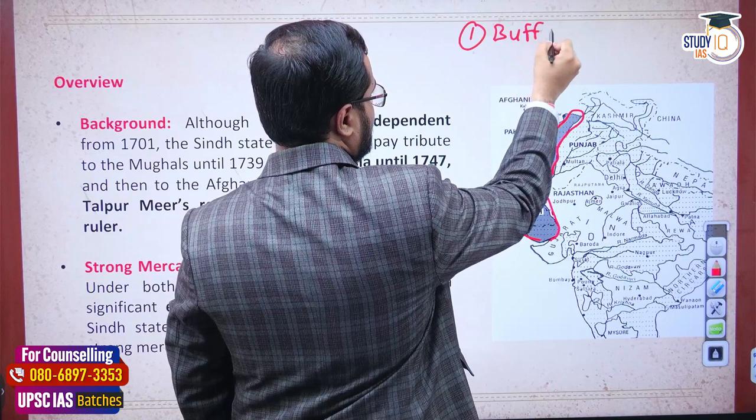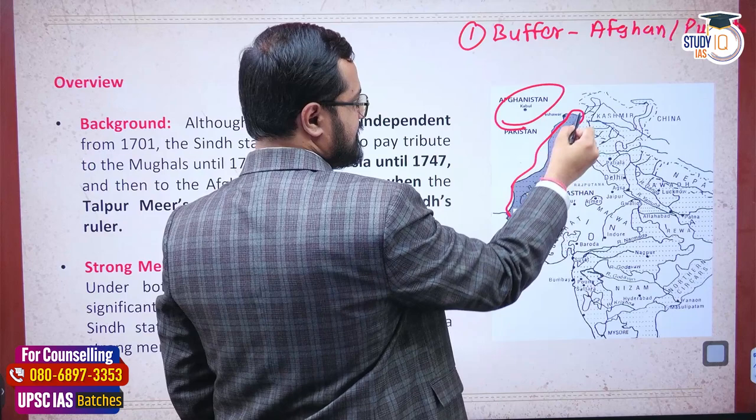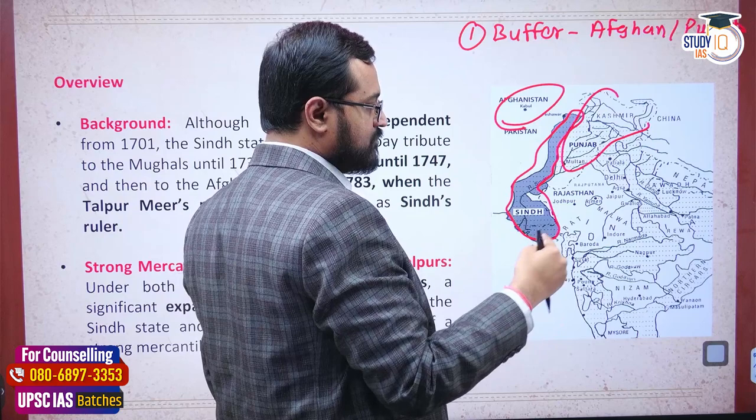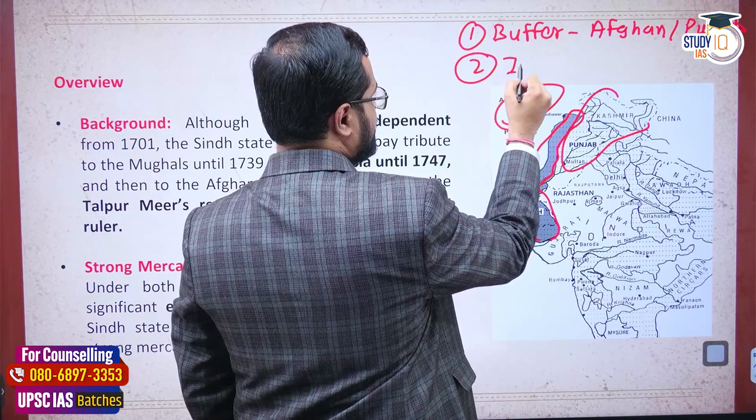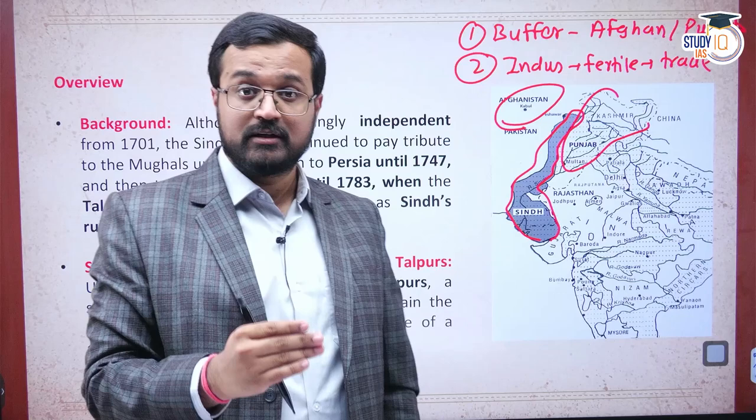Sindh has two key strategic features. First, it acts as a buffer in between Afghanistan and Punjab - Afghanistan has the Kabul-Kandahar line of defense above it. Second, it controls a major part of the River Indus. The fertile plains of the Indus mean agriculture, surplus, craft and industry, and therefore trade.